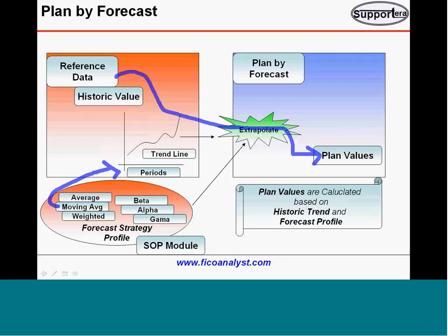It's complex — the alpha, beta, gamma models — what the system does internally, we don't fully know. But if a company is already using a forecast strategy for planning, they pretty much know these functionalities, because that's where their business already operates — they may be using weighted average, moving average, or other methods.